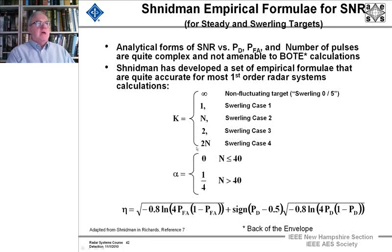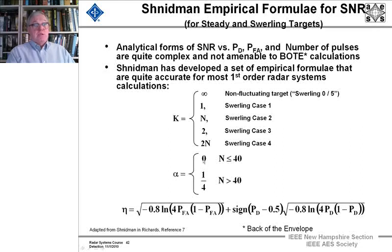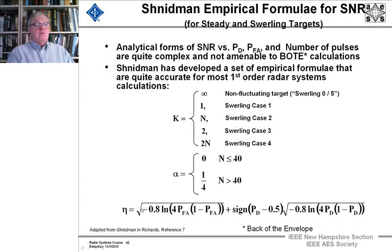Dr. Schneidman put this together and it's been published in the IEEE Aerospace and Electronic Systems Journal. We have the quantity K, which for a steady target is infinite, and 1 for Swerling case 1, and N for case 2, where N is the number of pulses. There's also a quantity alpha, which — remember this is an empirical formula — is 0 when integrating less than 40 pulses and 0.25 when integrating more. You then calculate a large quantity which depends on the probability of false alarm and the desired probability of detection to calculate the required signal-to-noise ratio.